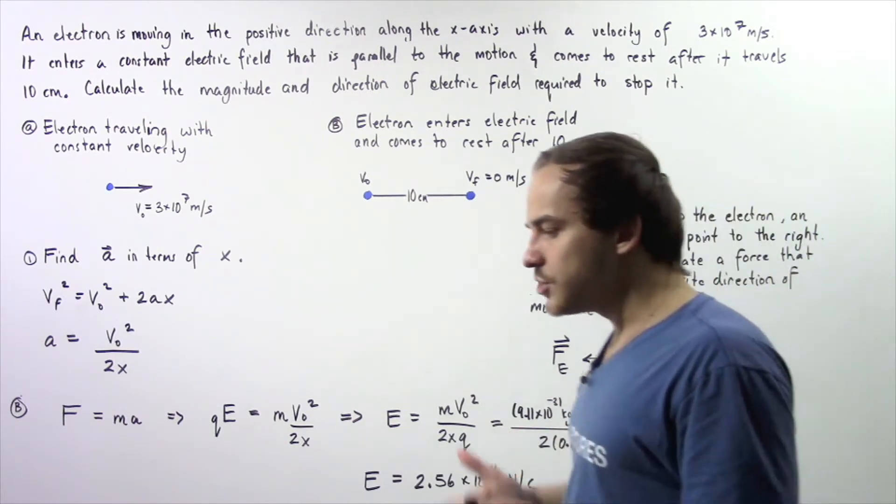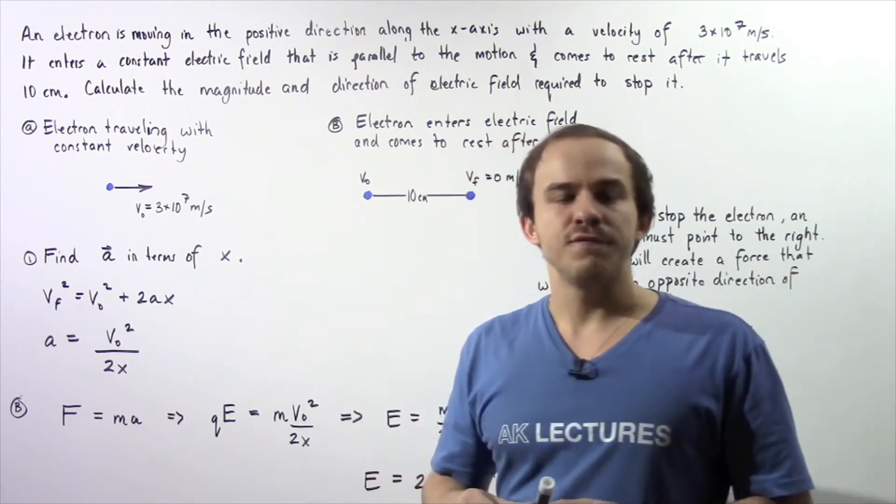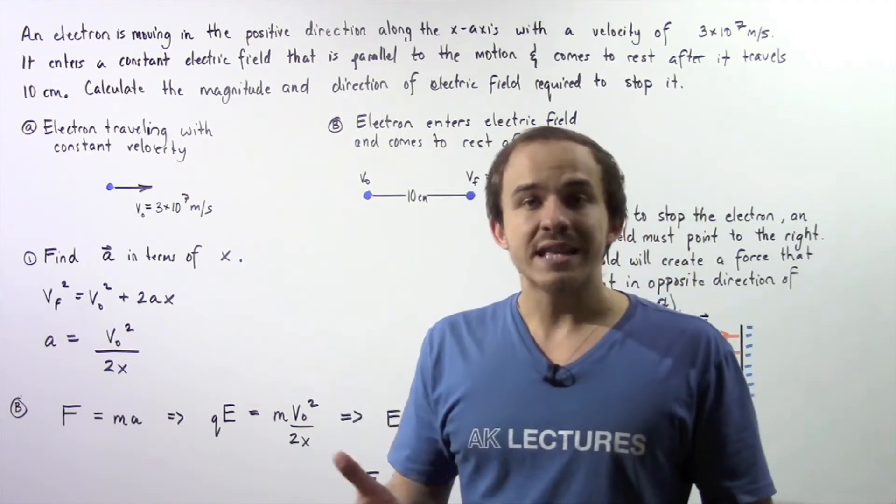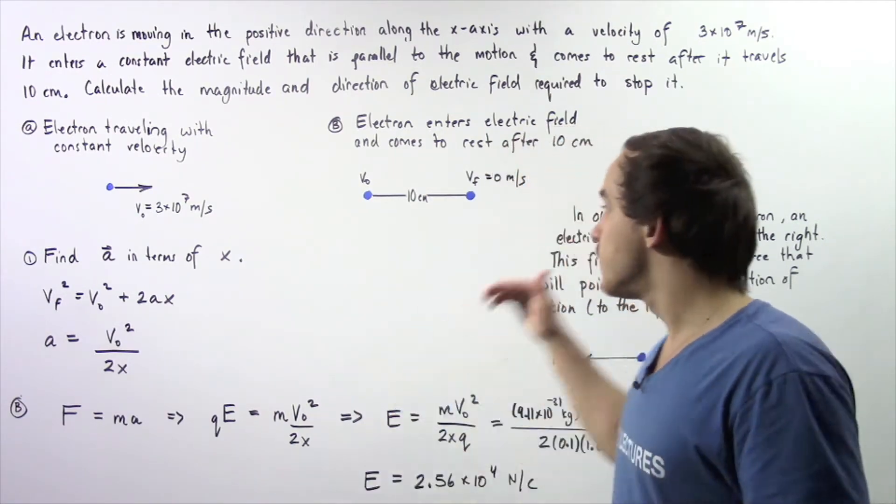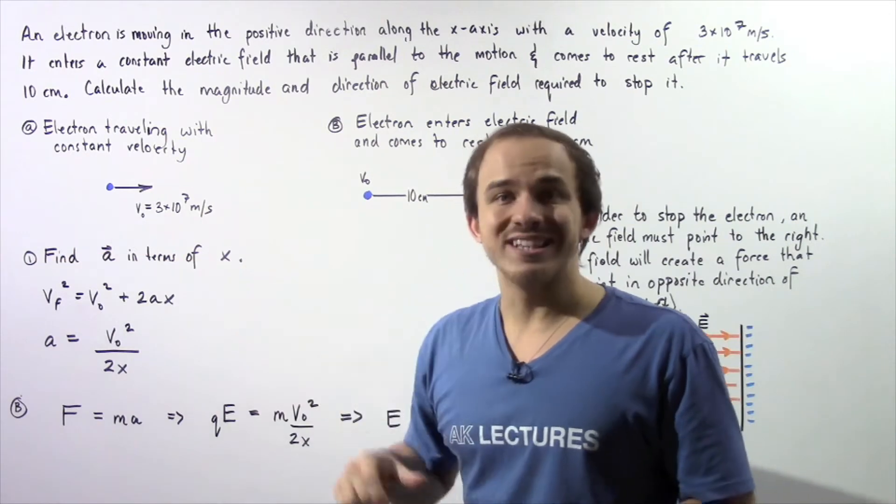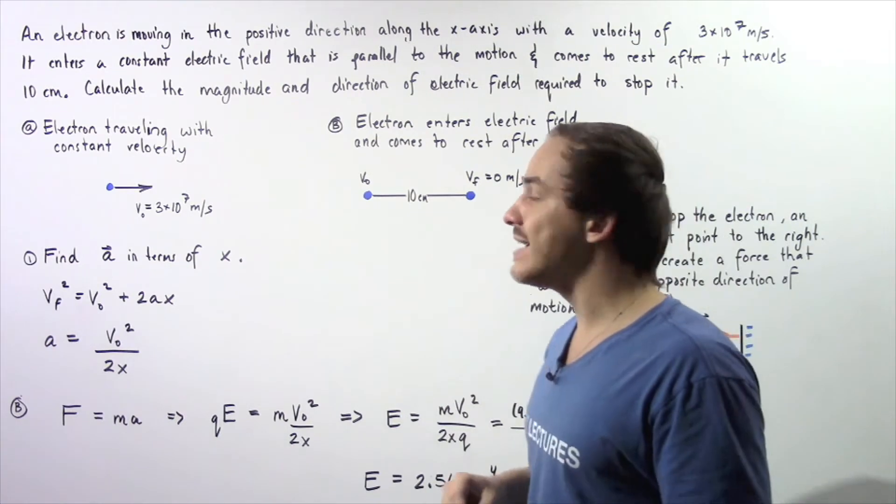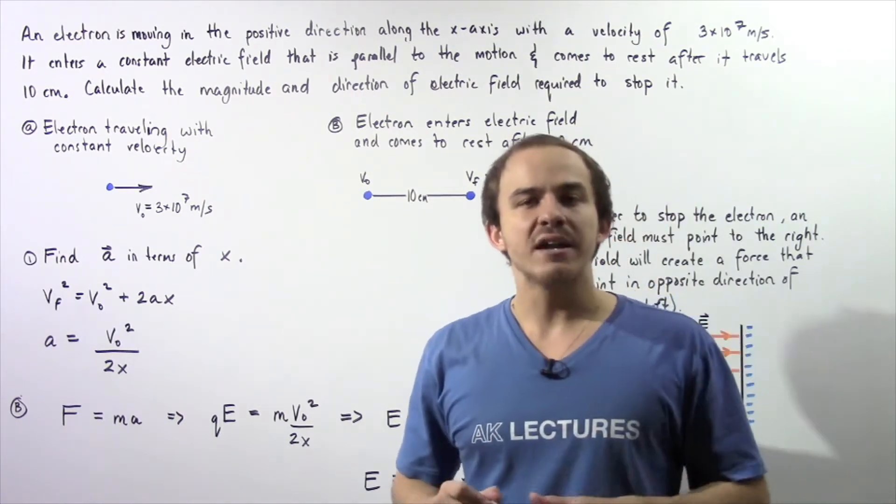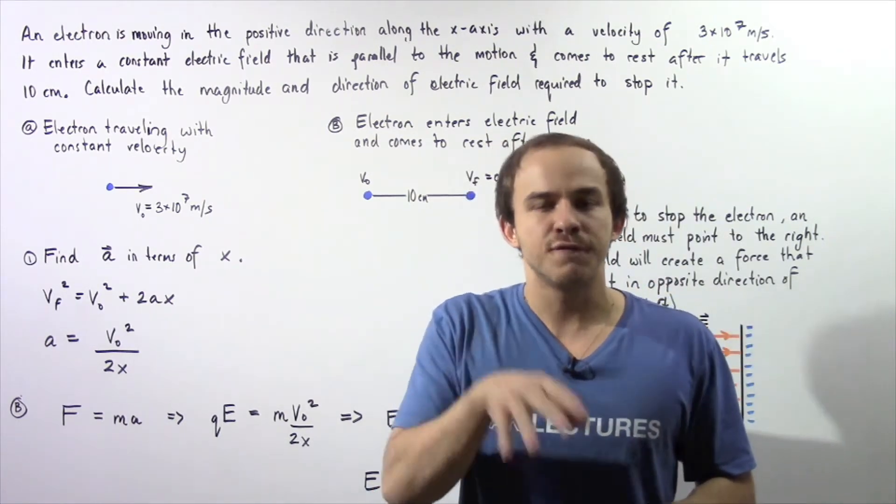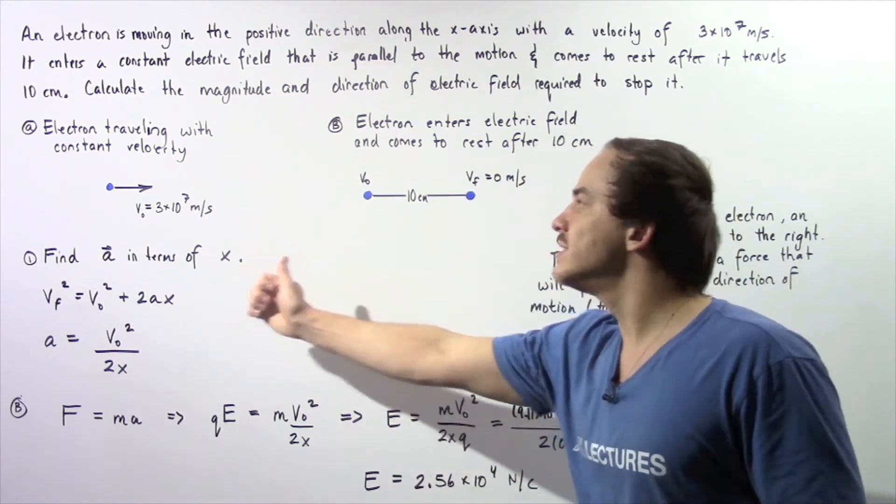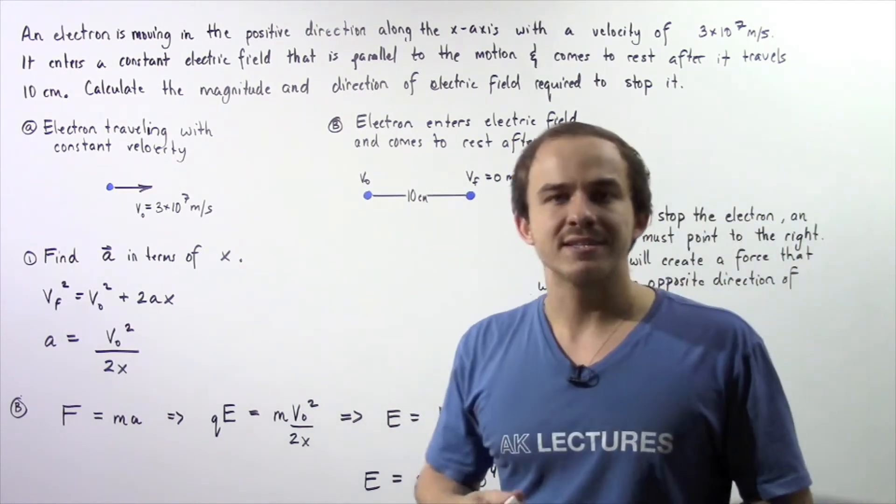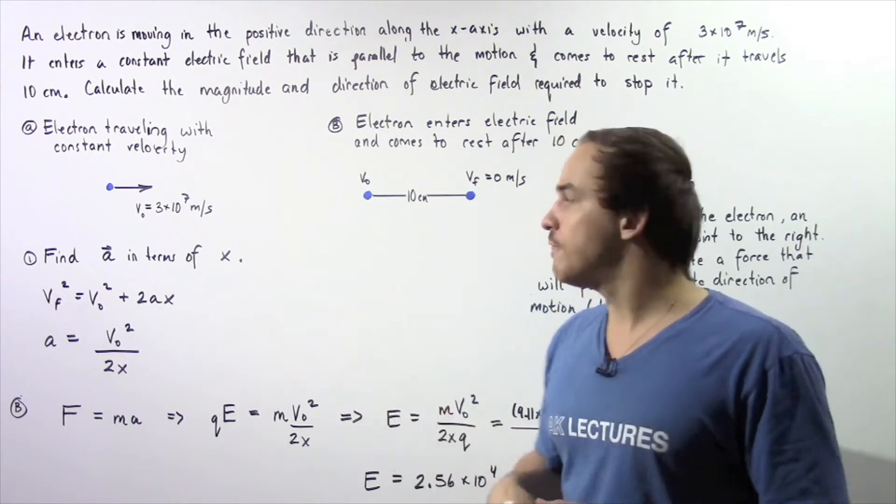In what direction should this electric field act? Because our force must act to the left along our x-axis and our electron has a negative charge, that implies that the electric field should point to the left along our x-axis in the opposite direction of the force.